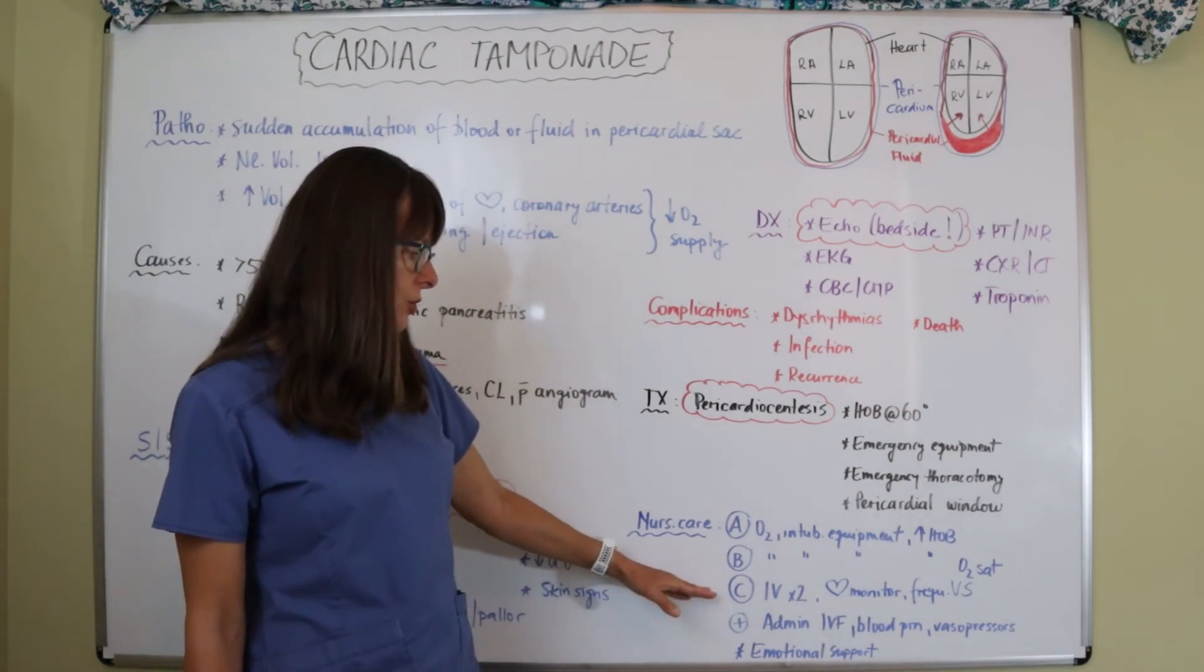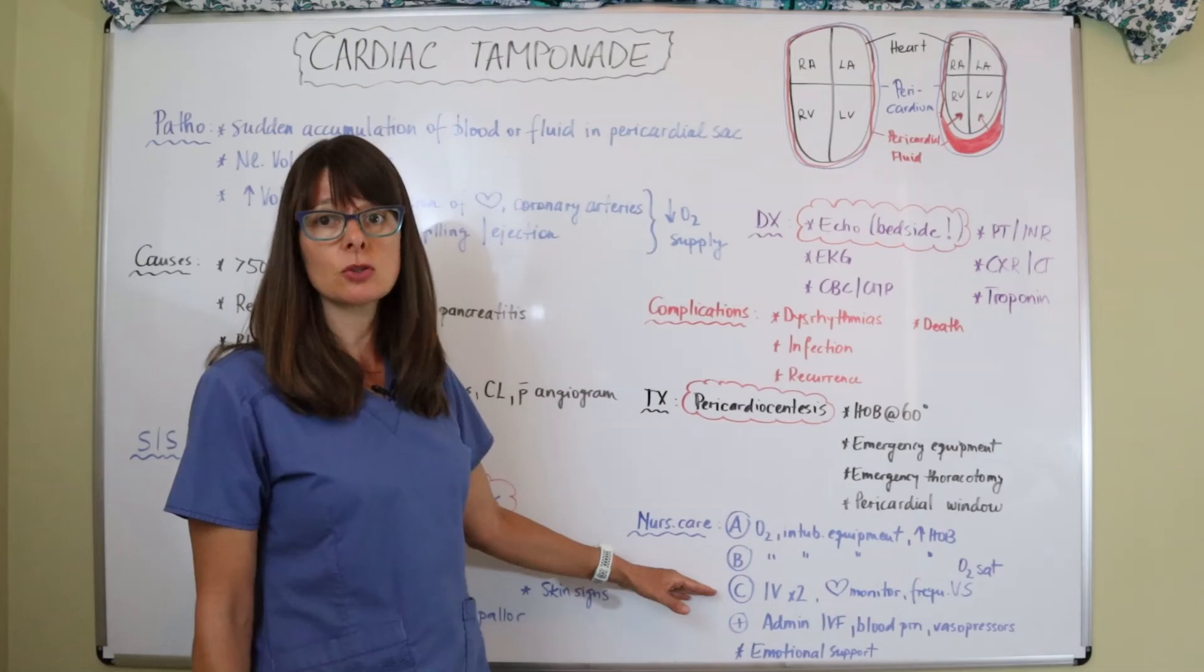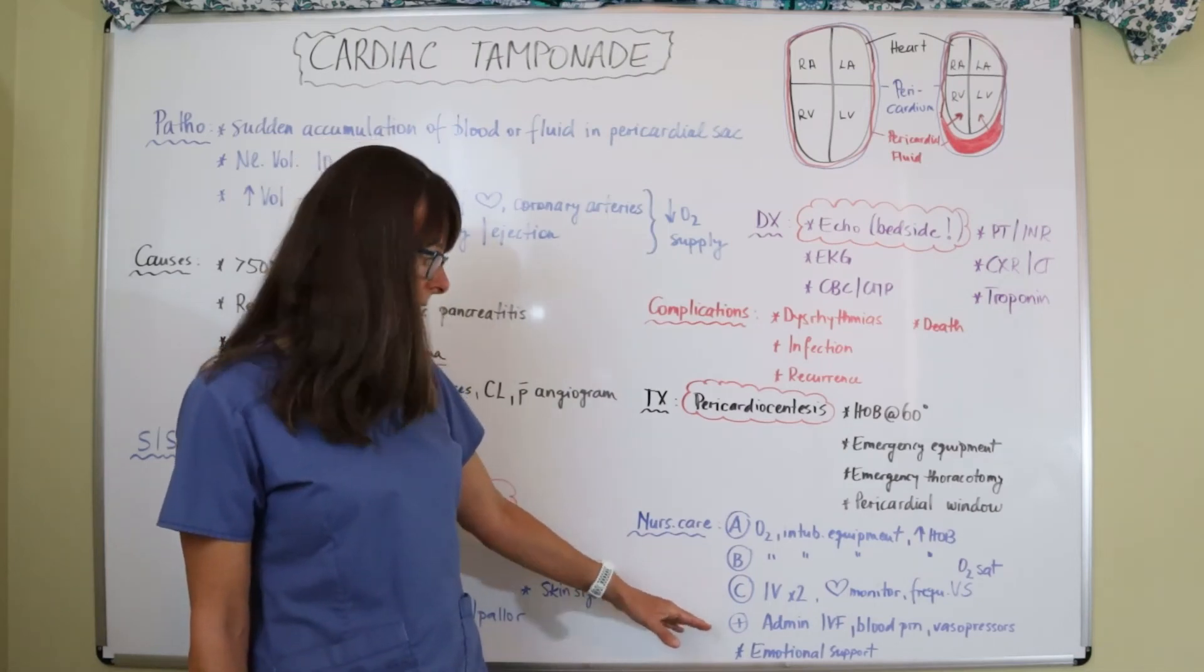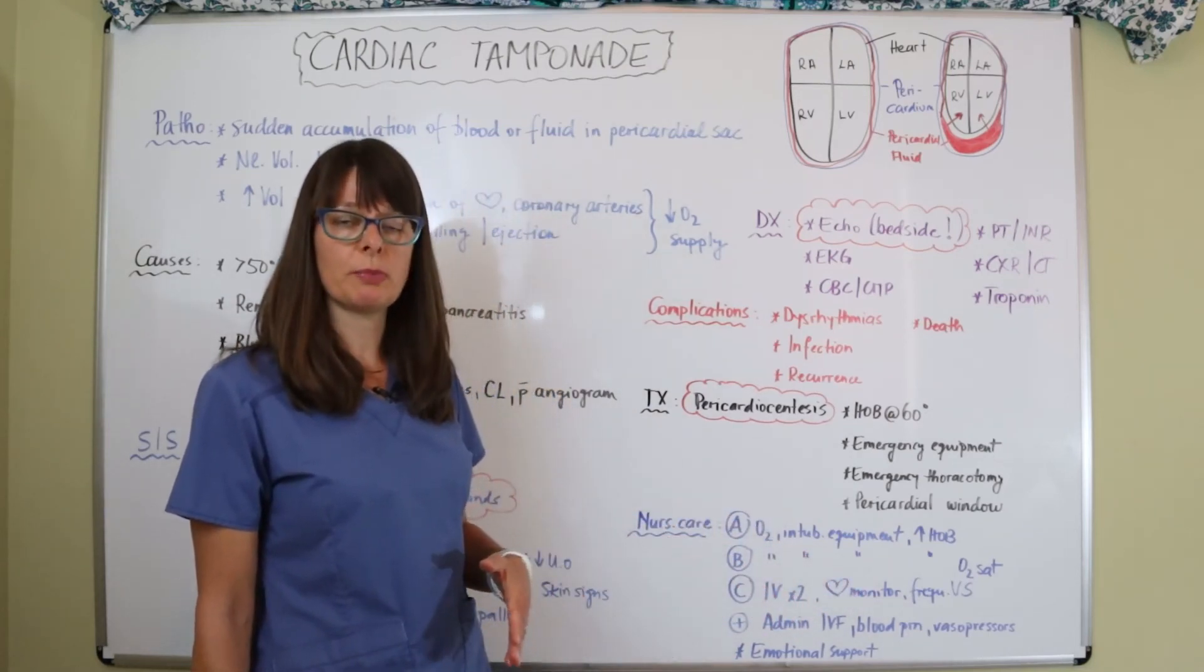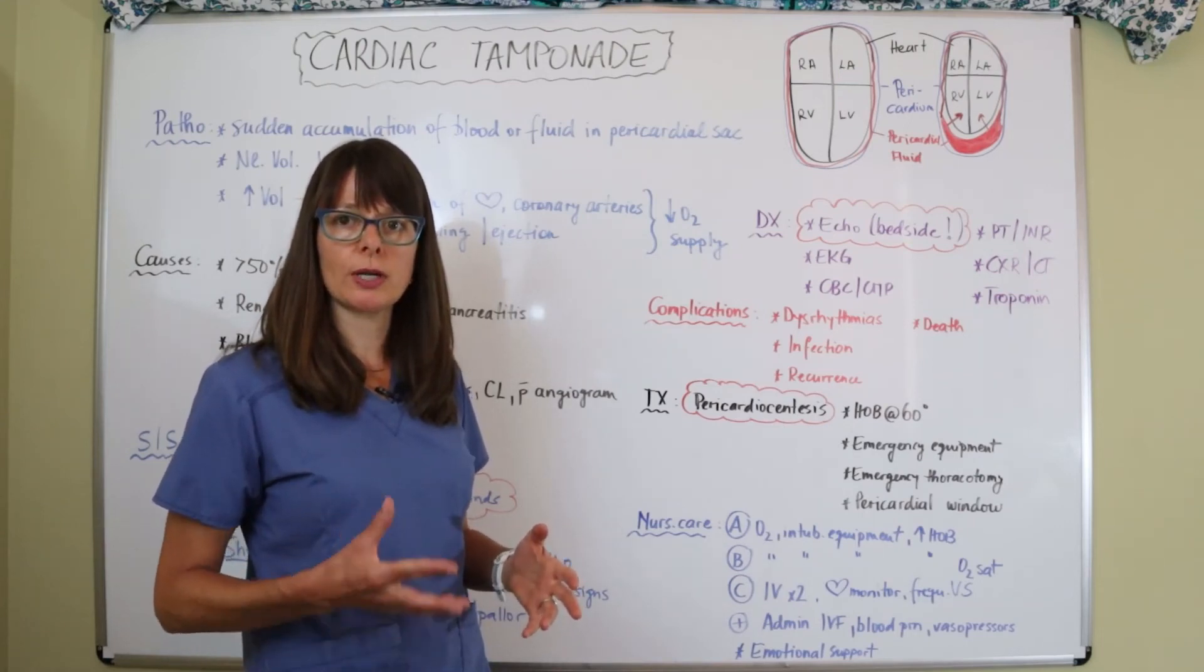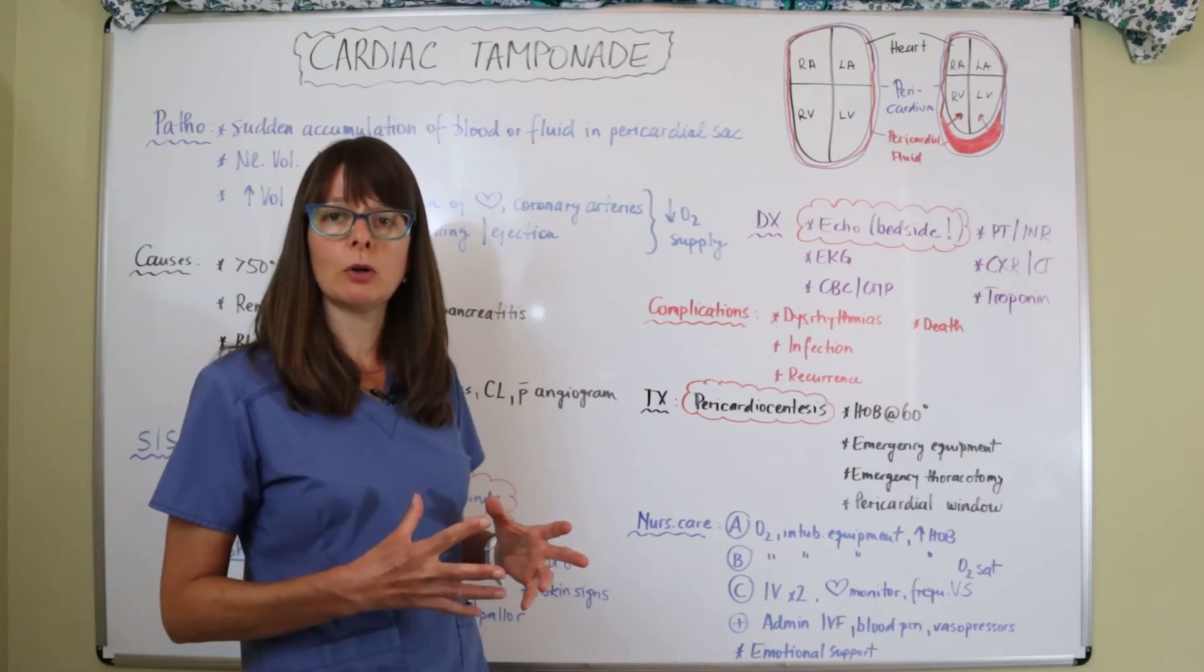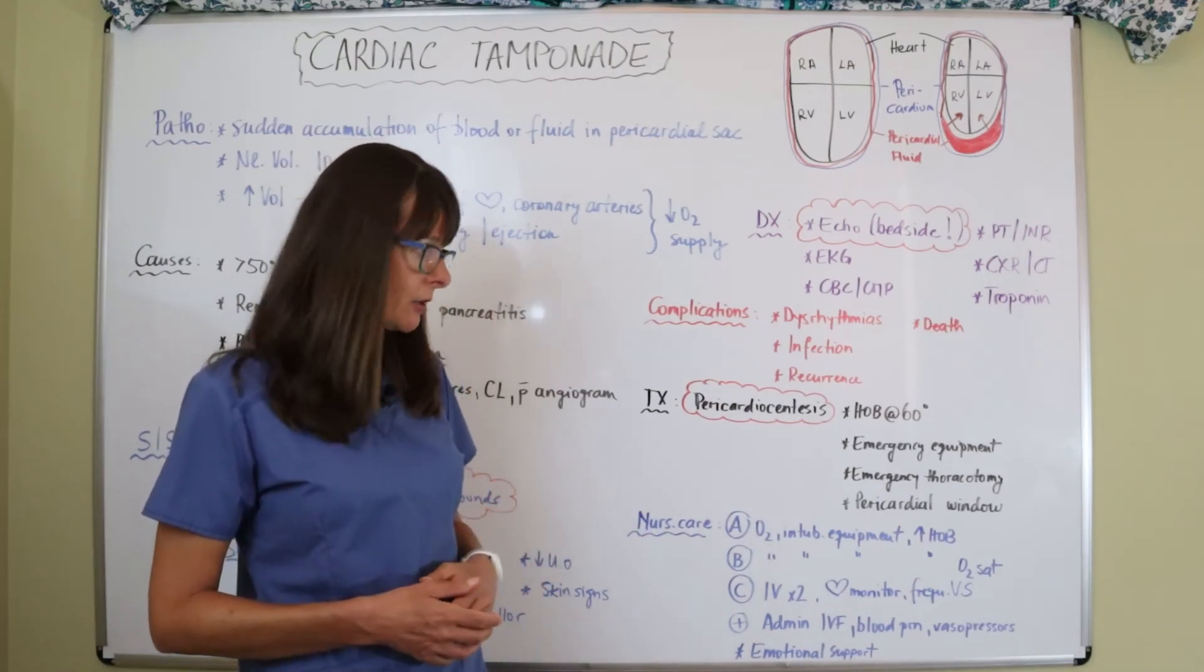In terms of C for circulation, we want to make sure we have a large bore IV and at least two of those accessible because we might have to anticipate administering IV fluids or blood products or vasopressors depending on how critical the patient is. And think about if this is a patient who just had a traumatic injury, there might be other injuries that we need to manage and be able to administer these medications and products if the need arises.